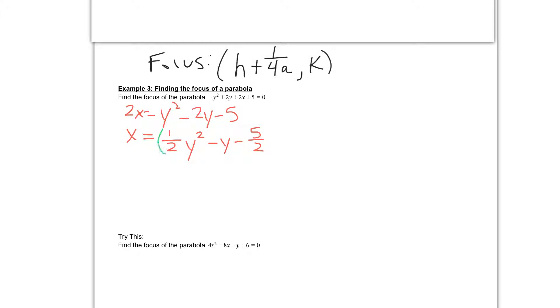To do that, I need to group together my y's, so my y squared and my y. And I get x equals. I'm going to factor out the 1 half that's in front of my y squared. So I get 1 half. In the parentheses, I have y squared. Now because I took out the 1 half, basically what you're doing is you're dividing. So I'm taking this negative 1 that's in front of my y, and I'm dividing it by the 1 half that I took in front.